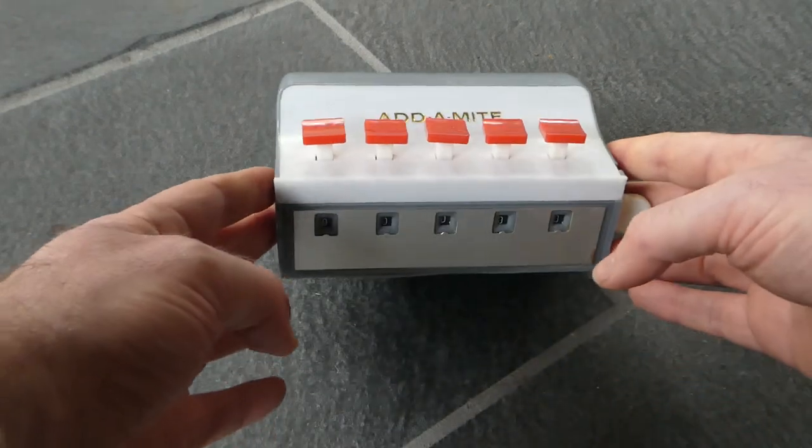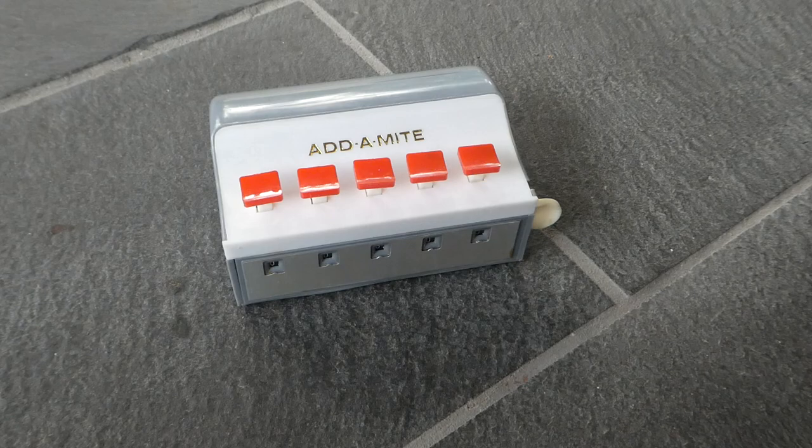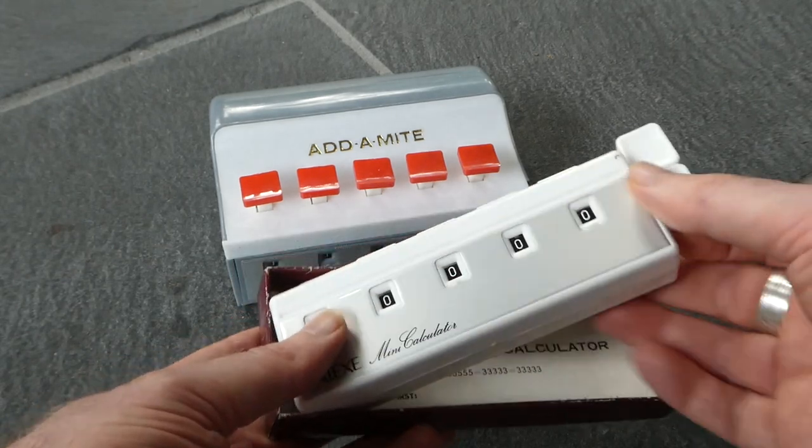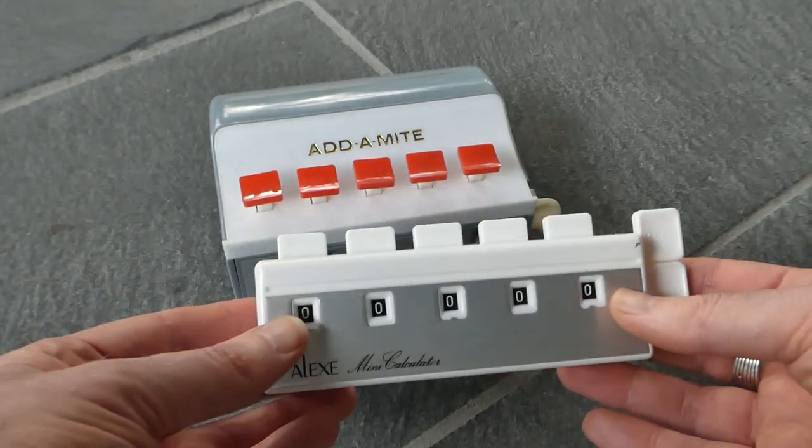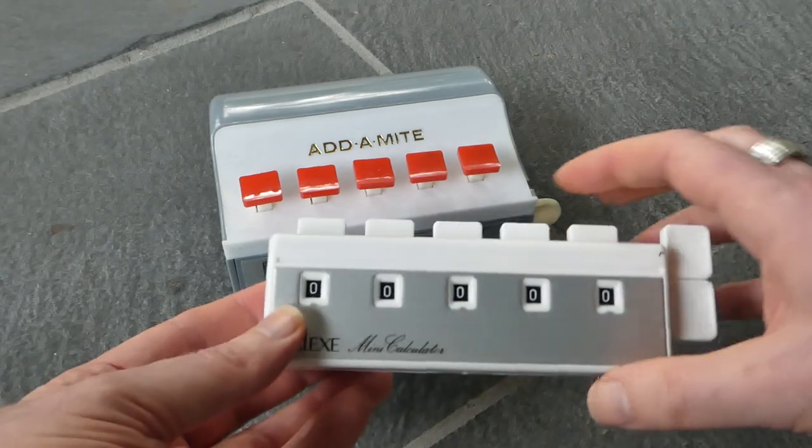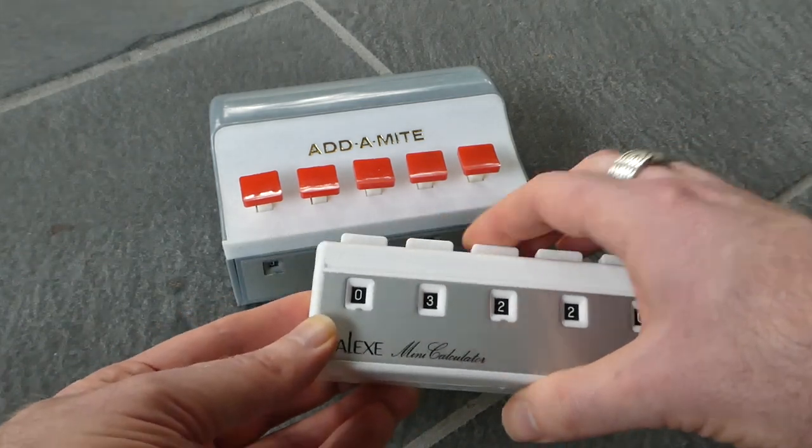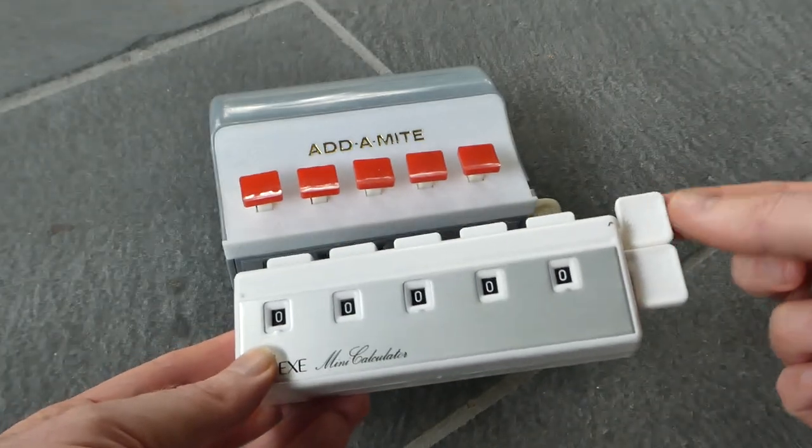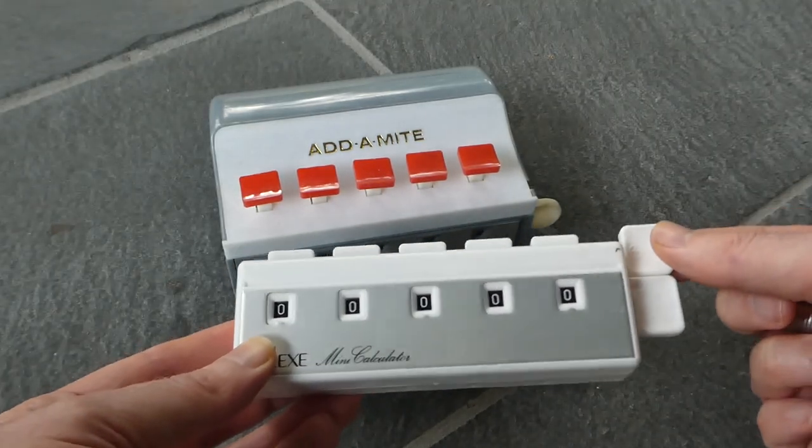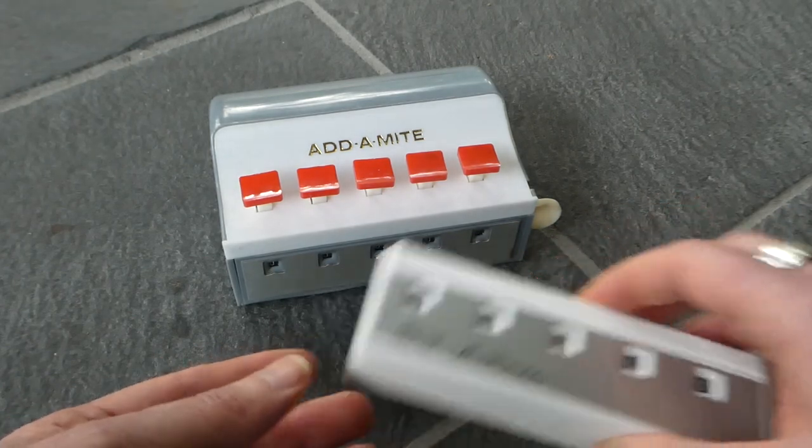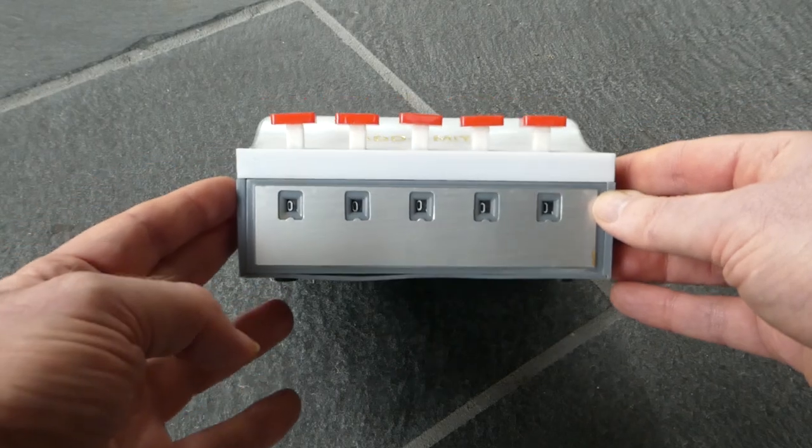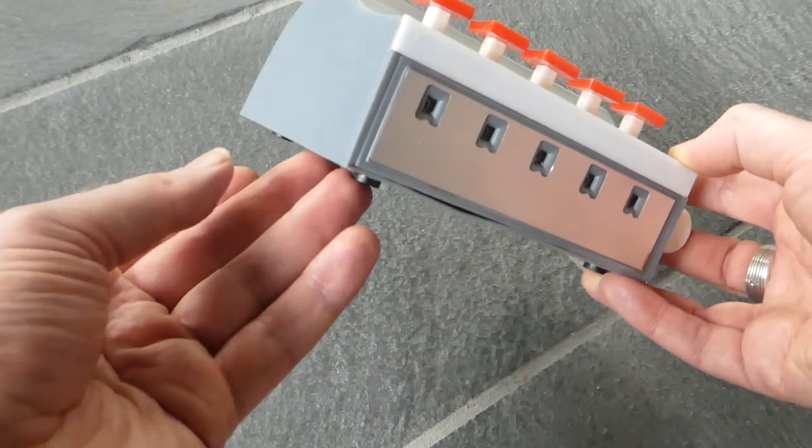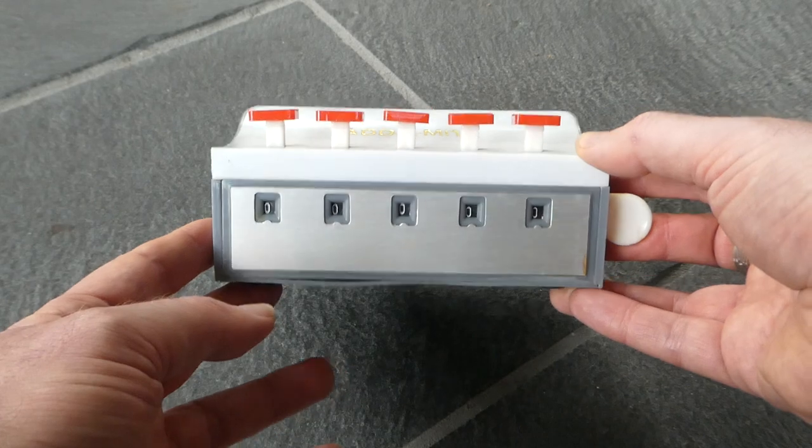This machine is essentially a cheap knockoff of the Alexa mini calculator. This machine is made in Japan and this works much better. This one you can even do subtraction with this lever. All of that has been changed for this. It's just a cheap clone and it was turned into a desk machine. But it's really rather useless to be honest.